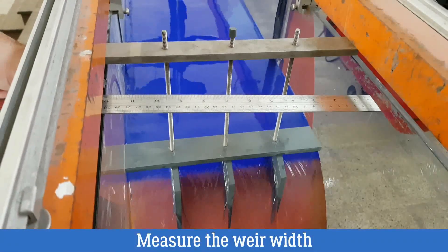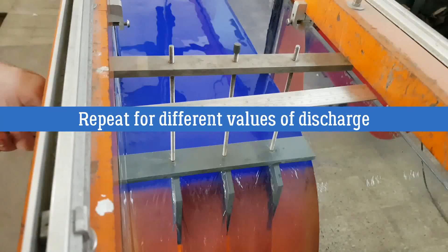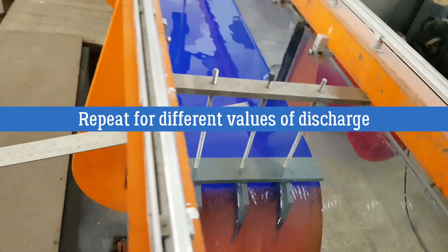Measure the weir width and then repeat for different values of the discharge.